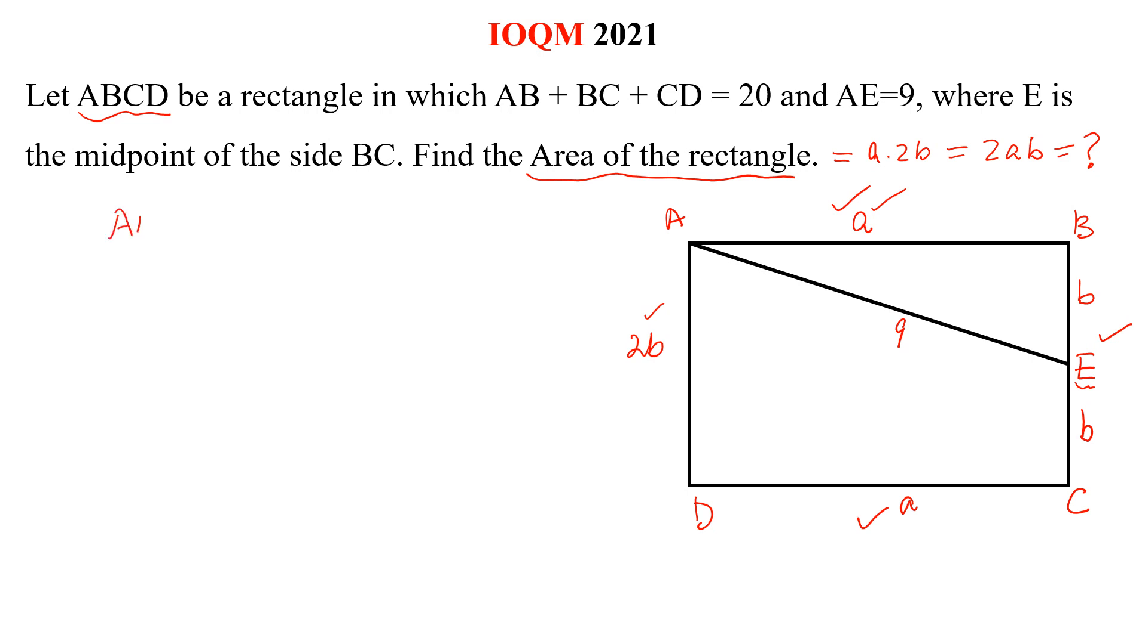From the question AB plus BC plus CD is equal to 20. A plus BC is 2B, B plus B and CD is also A. So this is 20.